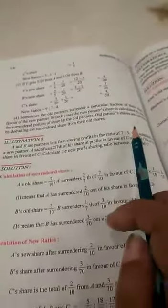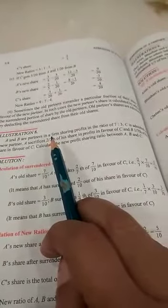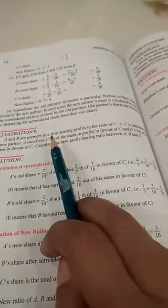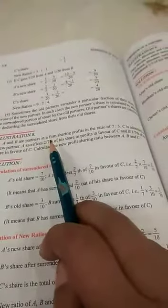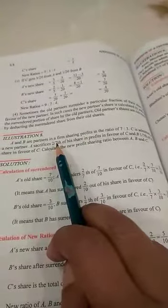If you read it very carefully, you come to know that C is admitted as a new partner. It is given C is going to be admitted in the firm, but the specific ratio acquired by C is not given. Instead of that, it is given how much the old partners A and B are sacrificing.